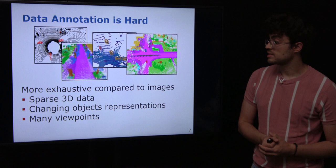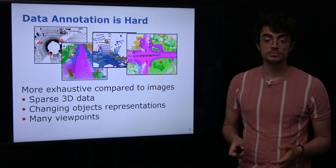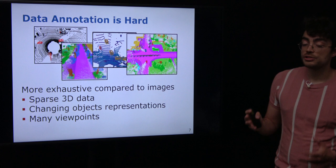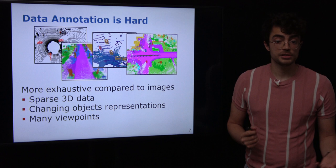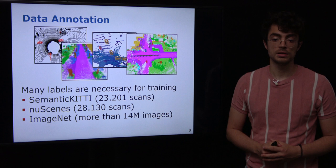Specifically in the LiDAR data domain, this annotation process is even harder compared to images, because the data is a 3D sparse point cloud. Object representations in 3D LiDAR data can change depending on the distance to the sensor, and while the car is driving we have many different viewpoints, which makes the chances of the object's representation changing even more during driving.